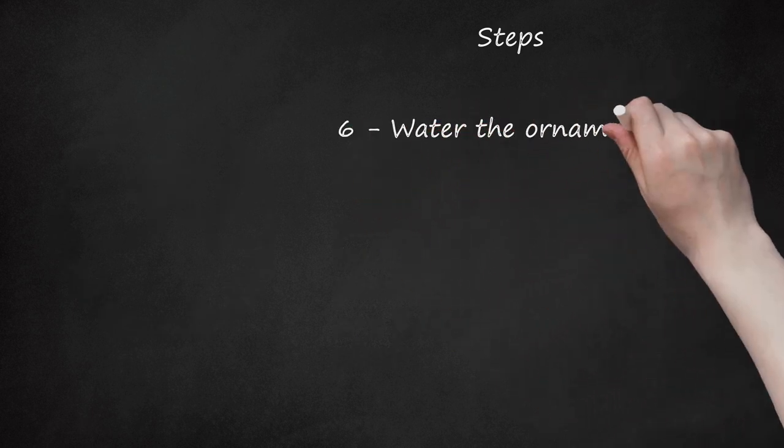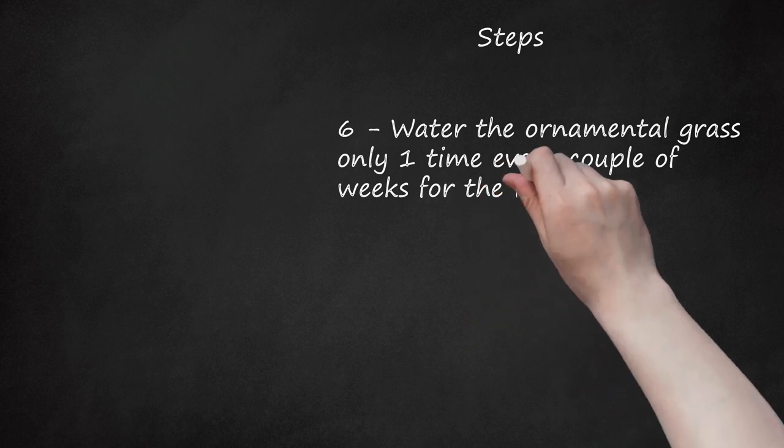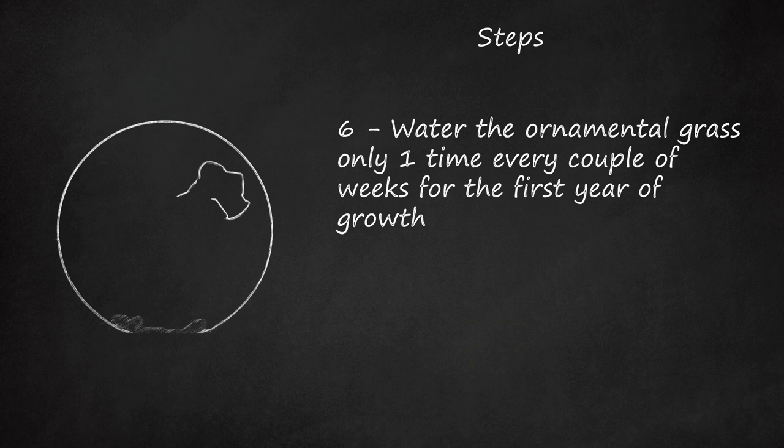6. Water the ornamental grass only one time every couple of weeks for the first year of growth. Water more frequently during periods of extreme drought. No watering is needed after the plant is well established.